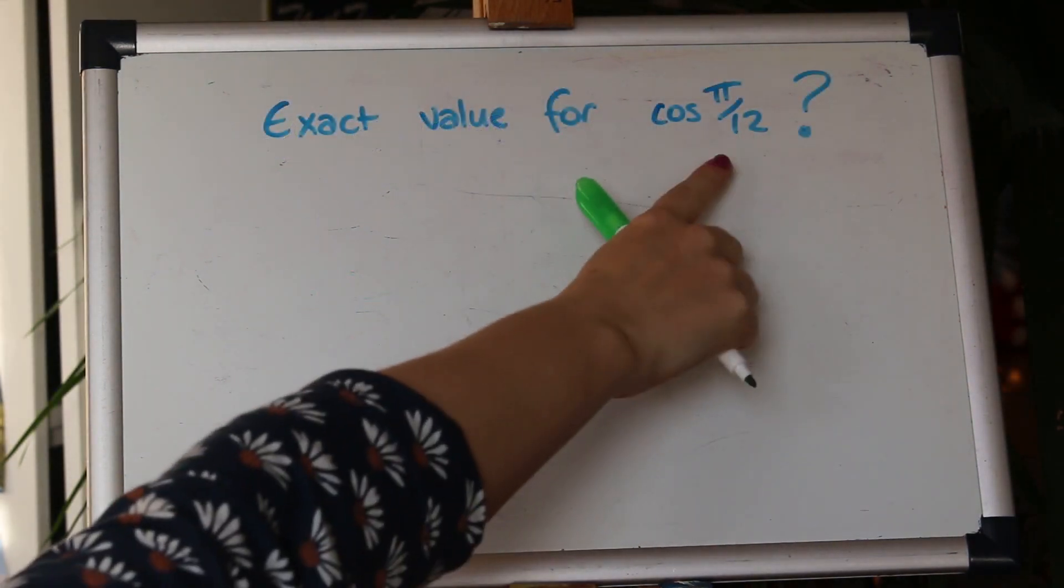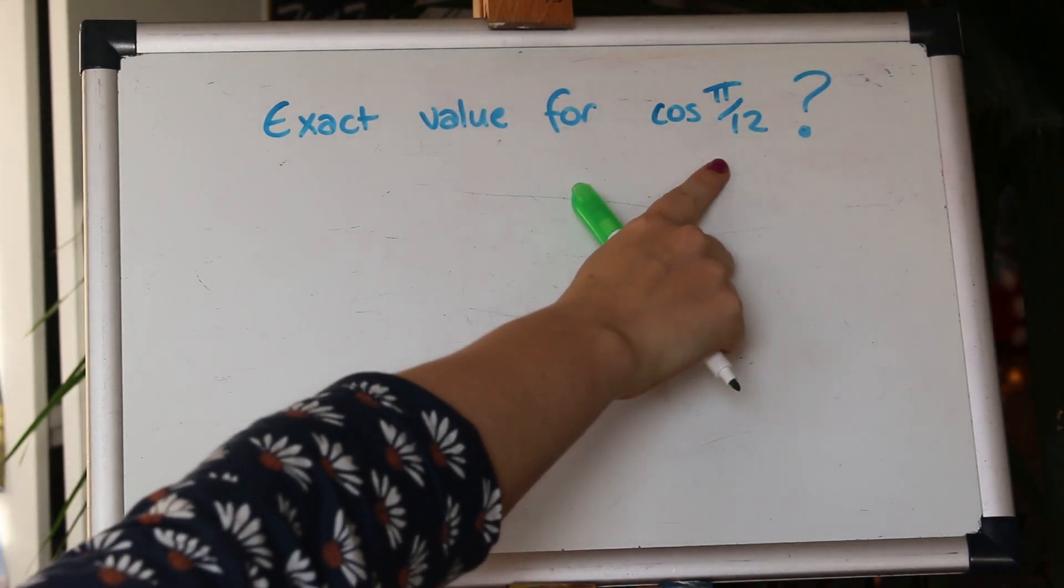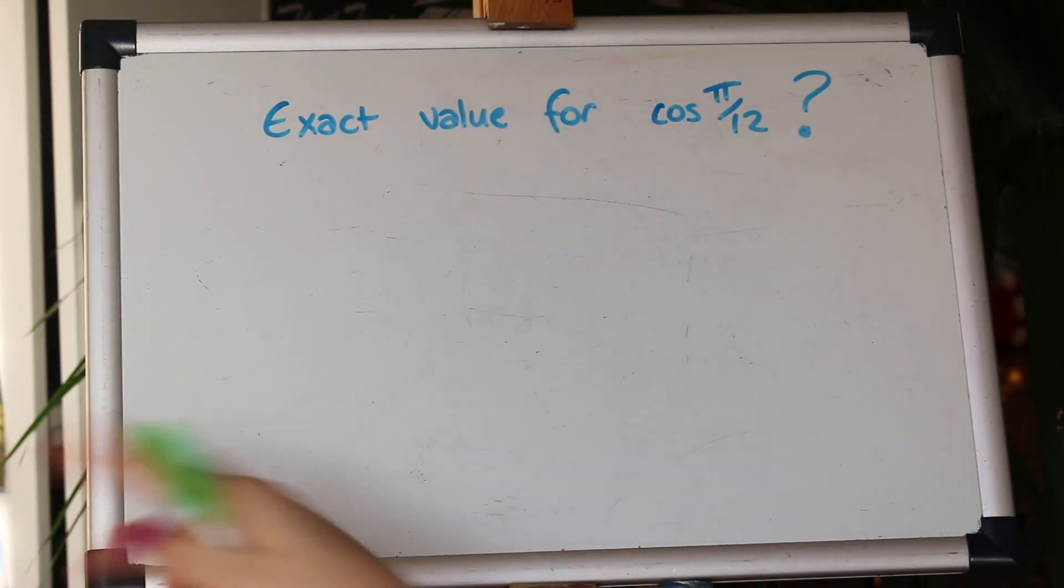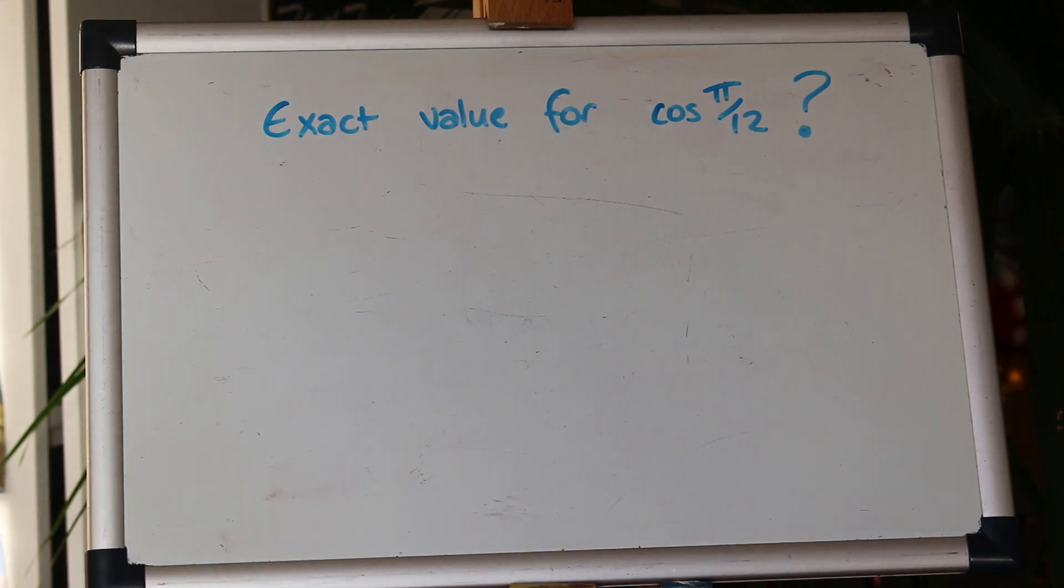Okay so we're asked for the exact value for cos of pi over 12. Again if you type it into your calculator and just get the answer you'd miss out on all the working marks. You need to show how to get it but of course you can use the calculator to check your answer is correct. So let's look at how to use the addition formula to get this.